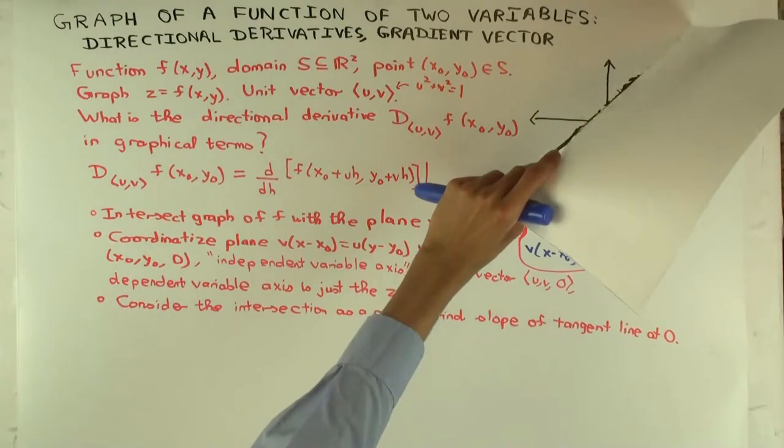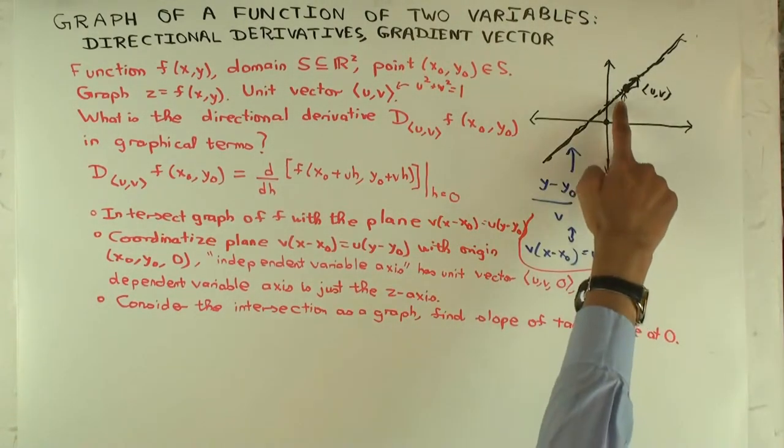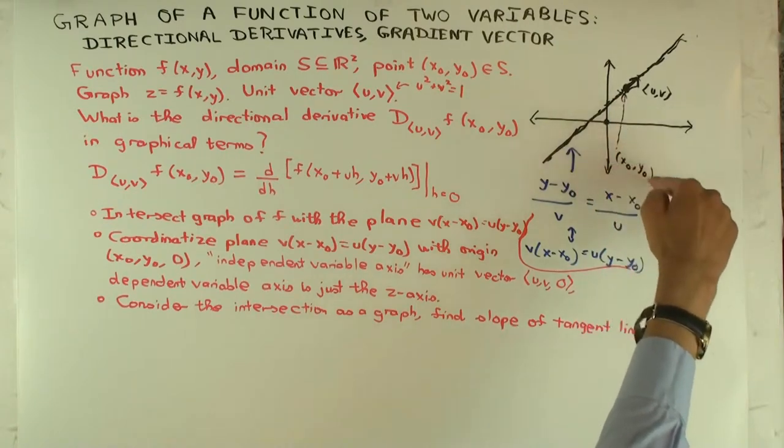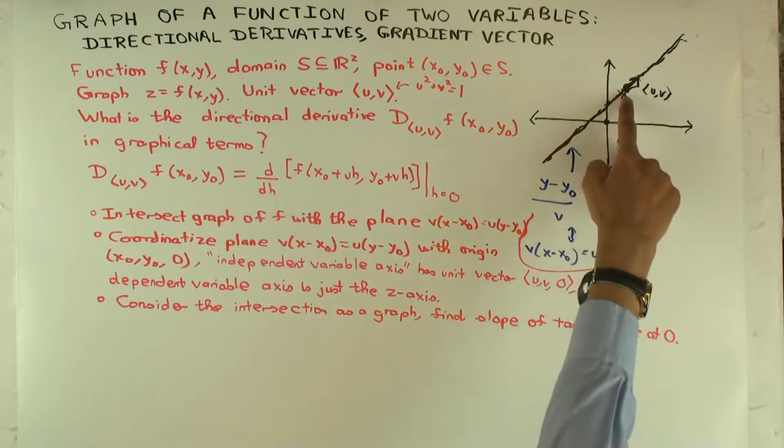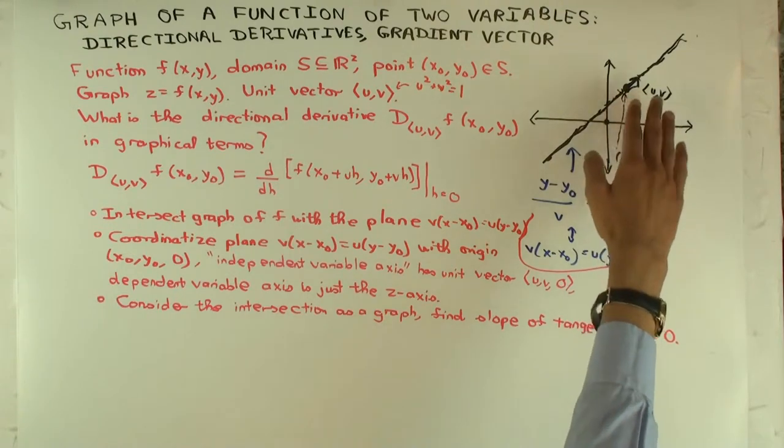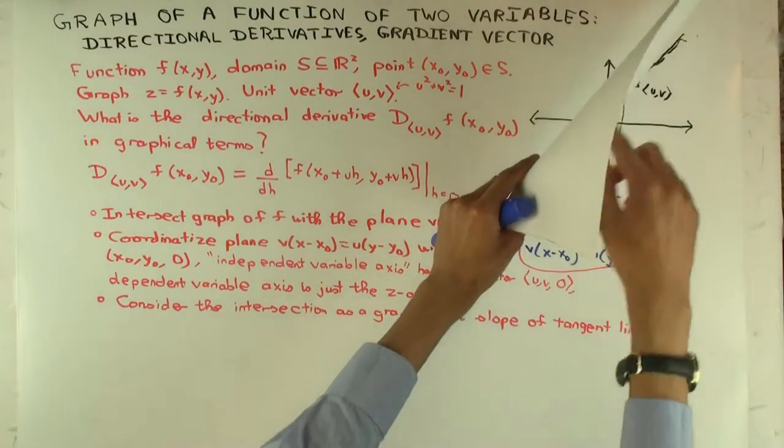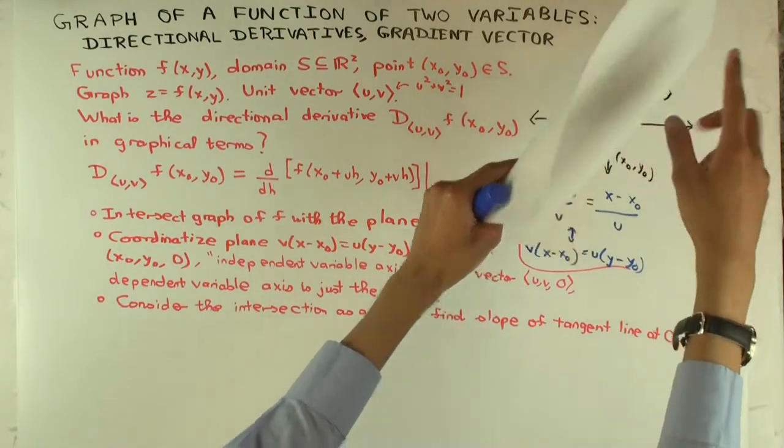Now we coordinate the plane. How did we coordinate the plane? What did we take as the origin? Well, we took the origin at this point (x₀,y₀,0) and we took as the unit vector in this direction the unit vector u. And then we looked at the intersection of this plane with the graph, which would be some picture in this plane.